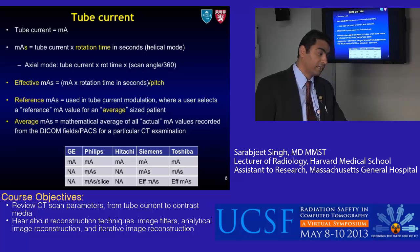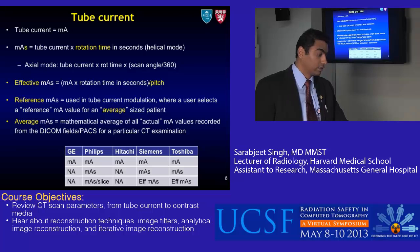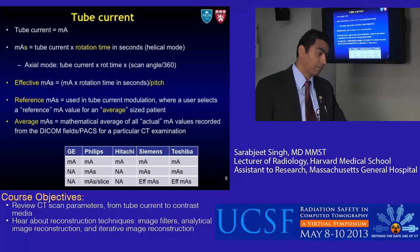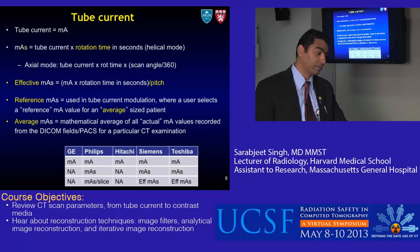Effective mAs is calculated by taking mAs and dividing it by pitch. Reference mAs is a different term used in tube current modulation by one scanner manufacturer, where the user selects a reference mA for an average-size patient — so it differs from effective mAs. Average mAs is the mathematical average of all actual mA values, which can be recorded from the DICOM fields or PACS for a particular CT examination.